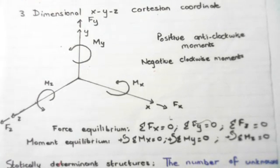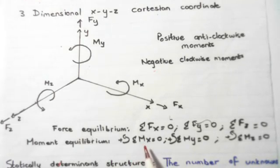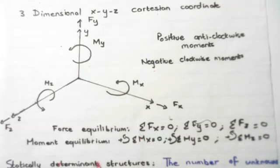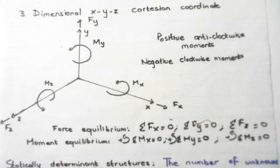To do moment equilibrium, we do the sum of moments about x equal to zero, the sum of moments about y equal to zero, and the sum of moments about z equal to zero. That is how we solve equilibrium — by adding forces together or applying moments together using lever arms.